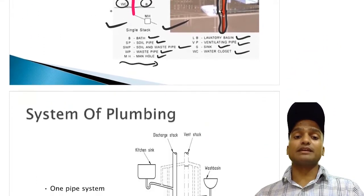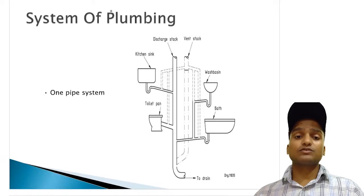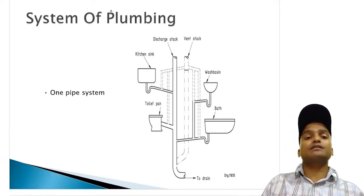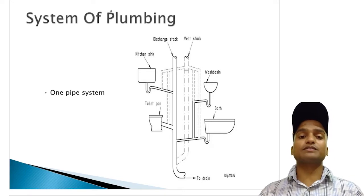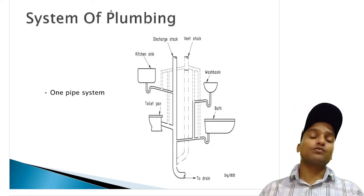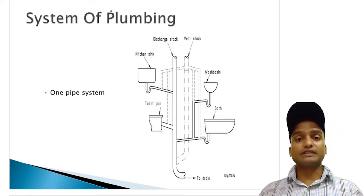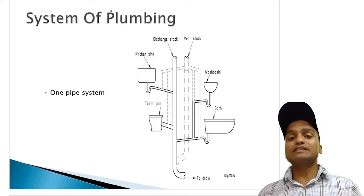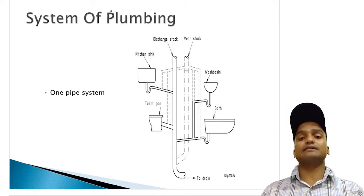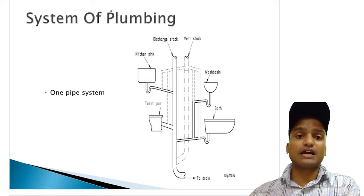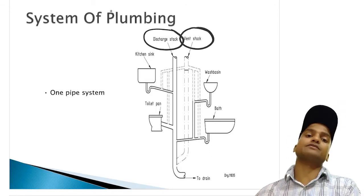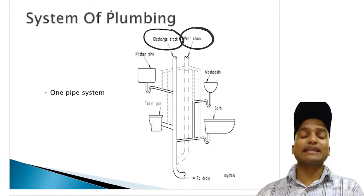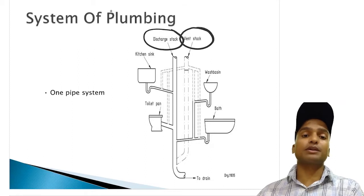The next system of plumbing is one pipe system. This is an advanced version of single stack system. What we have changed in this one pipe system is that we have used one separate pipe for discharge as well as one separate pipe for ventilation. There is one discharge stack pipe you can see and there is another vent stack pipe also. Both pipes are running parallelly and vertically from the top to the bottom.